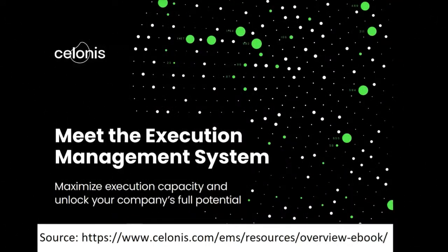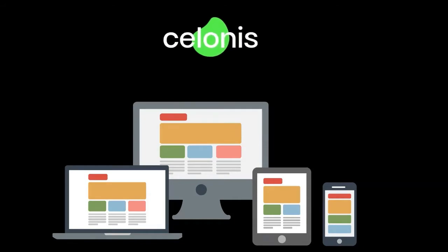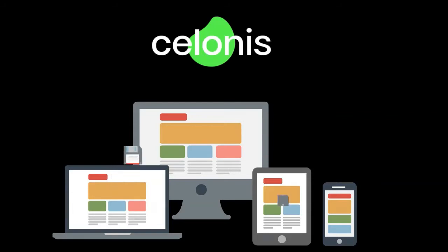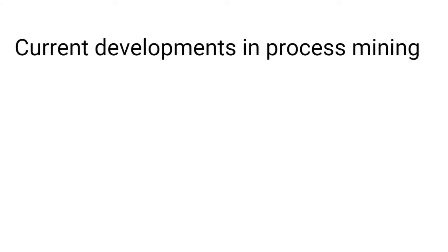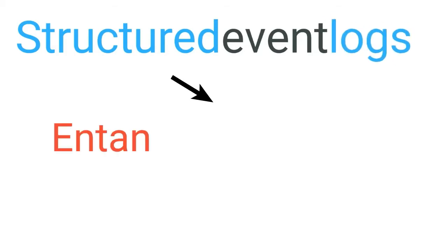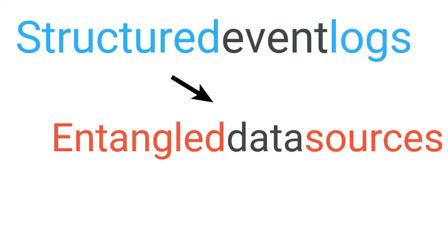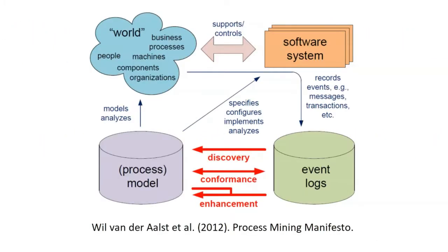We need a process mining application that can automatically send alerts to process owners and take corrective actions when necessary. This is where the Salonis Execution Management System, EMS, fits in. The Salonis EMS acts as an intelligent layer on top of an organization's underlying business systems to identify and remove process constraints. The current development in process mining can be described as a shift from insights to actions, and a shift from structured event logs to complex, entangled data sources and processes.